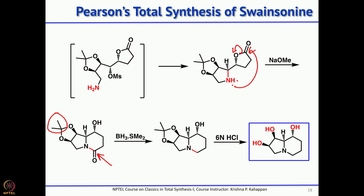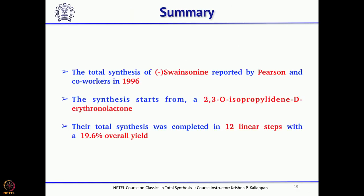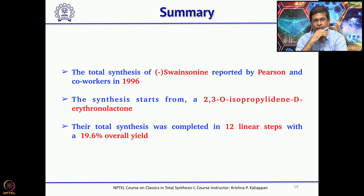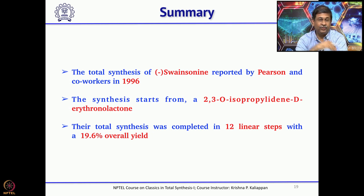Overall, this synthesis reported by Pearson in 1996 started from D-erythrose and involved about 12 longest linear steps. However, the yield is quite good — they could get about 20% overall yield.